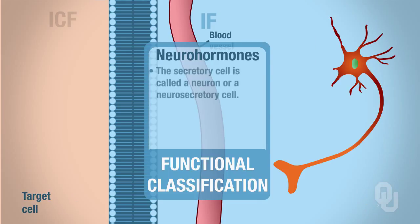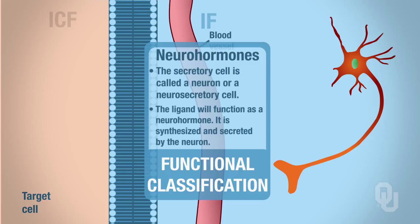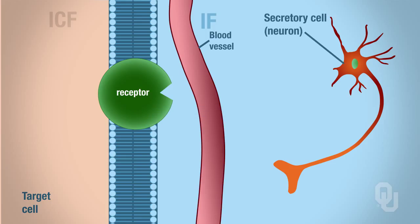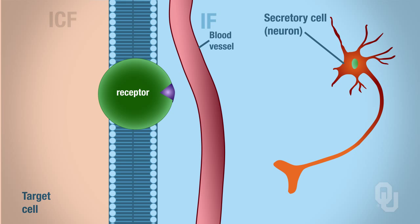Finally, we have neurohormones. The secretory cell is called a neuron or neurosecretory cell. The ligand is the neurohormone — named so because it's a neuron that synthesizes and secretes the hormone. The neurohormone travels through the interstitial fluid and then through the blood to reach the target cell, where it binds to the receptor and produces a target cell response.